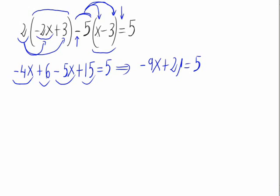We want to isolate the x value so the first thing we do is take this 21 which is adding to the other side subtracting. So negative 9x equals 5 minus 21.